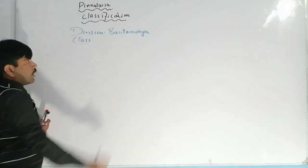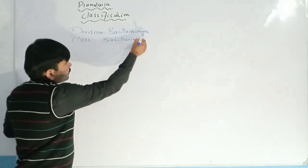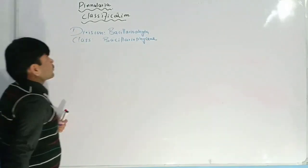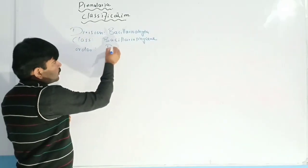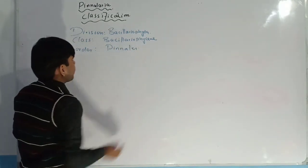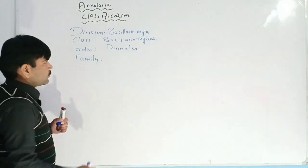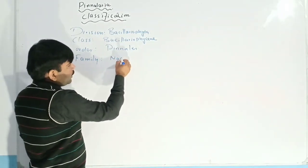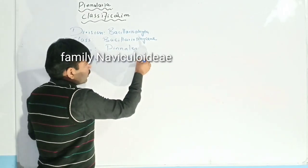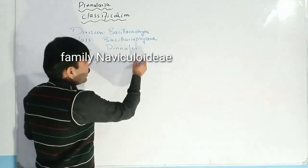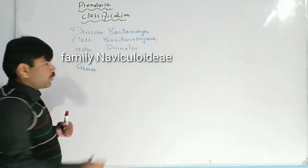The class of Pinnularia is Bacillariophyta. The order of Pinnularia is Pinnales. The family of Pinnularia is Naviculida. And the genus of Pinnularia is Pinnularia.